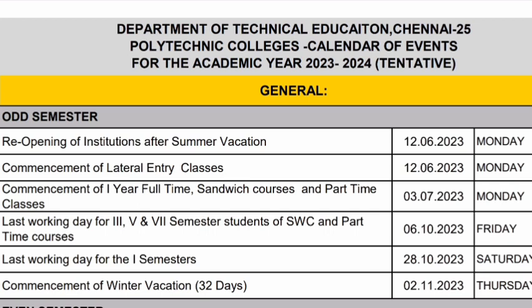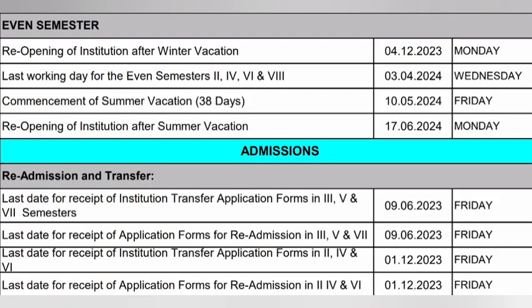Second year and third year last working day, and first year last working day for first semester: 20-10-2023. First semester ends on 6-10-2023, with 22 days remaining. Commencement of winter vacation and leave starts on 2-11-2023, Thursday, with 32 days of leave.